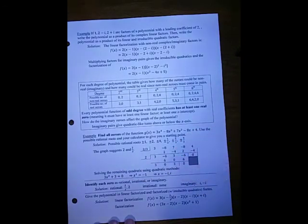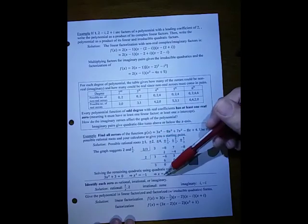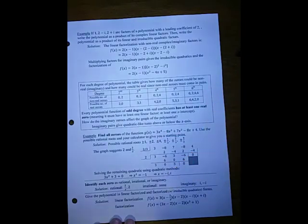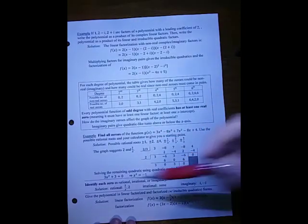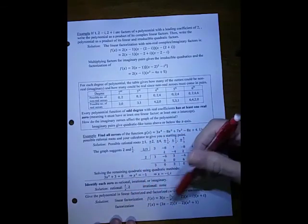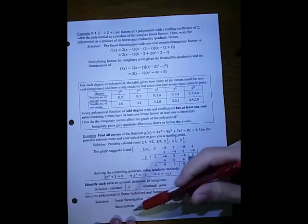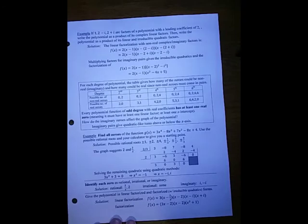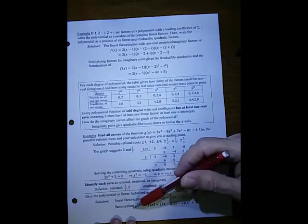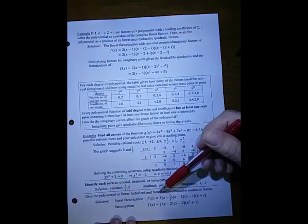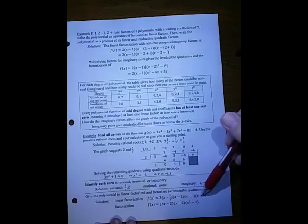You would want to solve that using quadratic methods. That gives you two imaginary zeros. If you identify each one as type, these two are rational and these two are imaginary. None of them are irrational. And then if you give the linear factorization, of course that includes all the imaginary. And when you say just the factorization, that includes the irreducible quadratics where you combine the imaginary pairs. So the factorization would include irrationals as linear. Only the imaginary pairs would be combined.